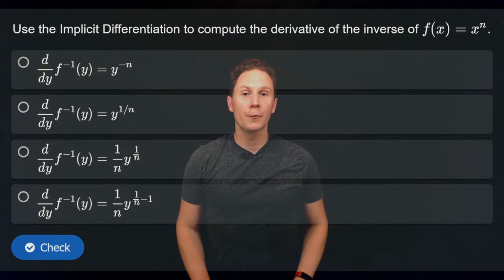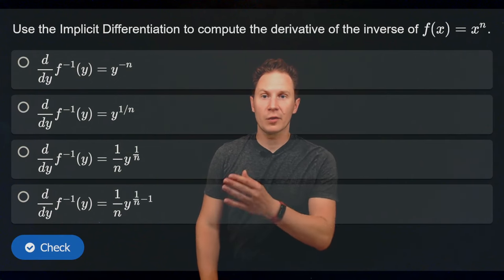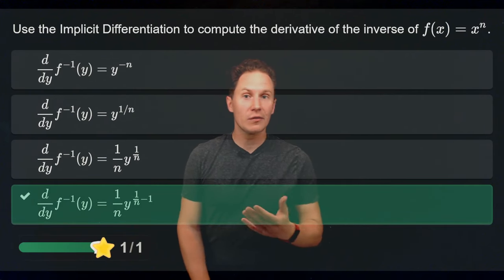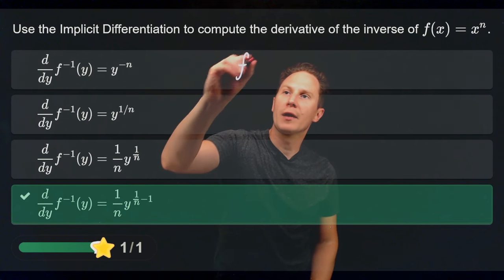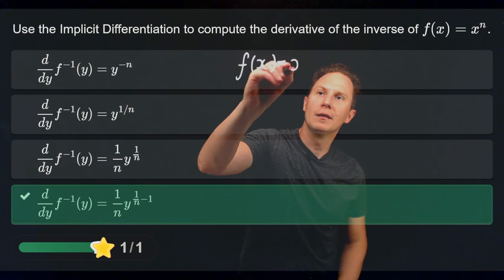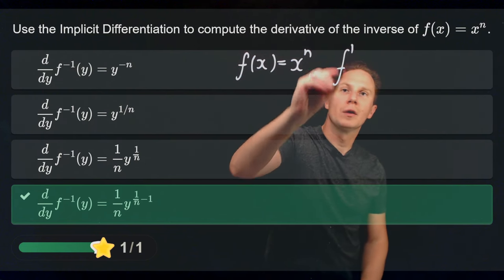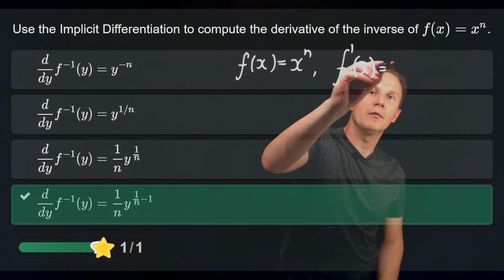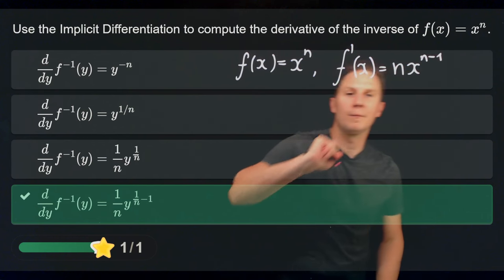Use implicit differentiation to compute the derivative of the inverse of f(x) equals x to the n. We have f(x) equals x to the n, and its derivative, for n being a positive integer by the power rule, is n times x to the n minus 1. But it's not this derivative we are looking for — we want the derivative of f⁻¹.